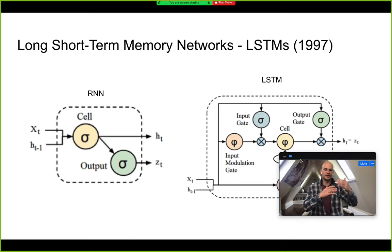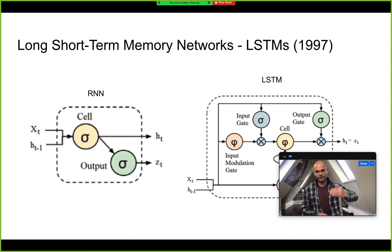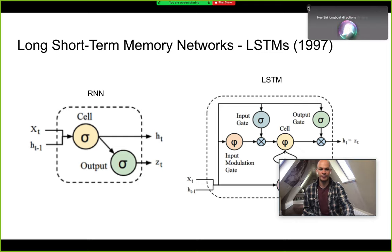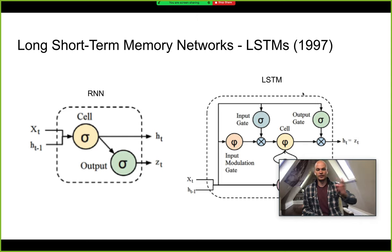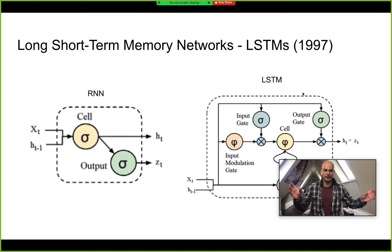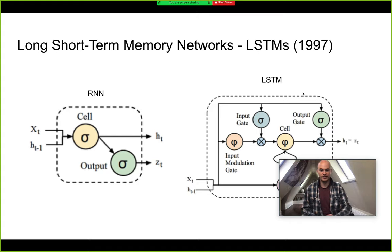Sometimes with LSTMs and RNNs, these layers are stacked so you have multiple passes rather than just one. Another technique people started using with LSTMs is going both directions — known as the bidirectional LSTM — where you're passing things through the sequence in both directions. This was something being worked on in NLP to help get more context around where different tokens are in the sequence.